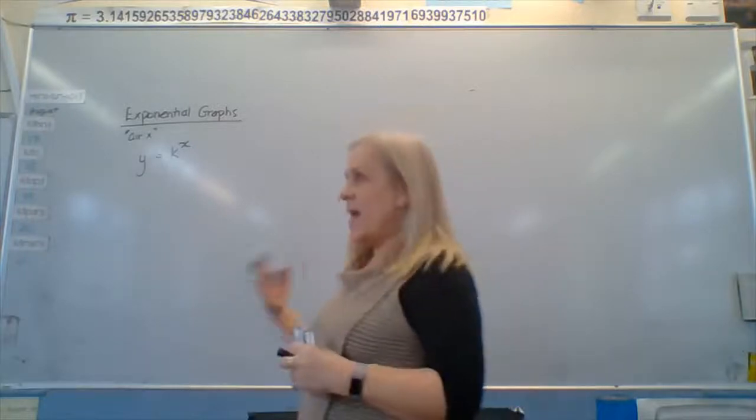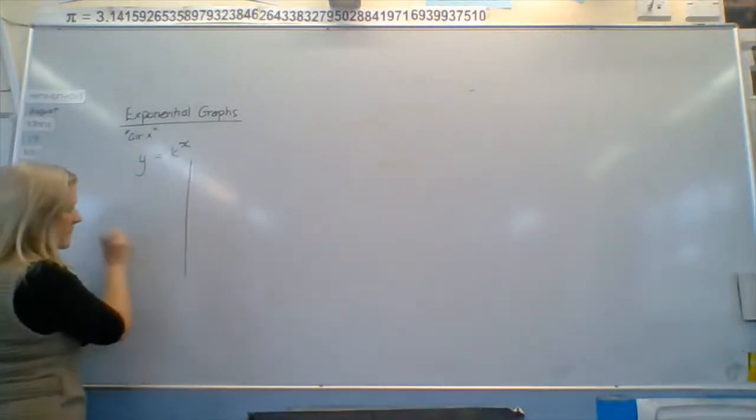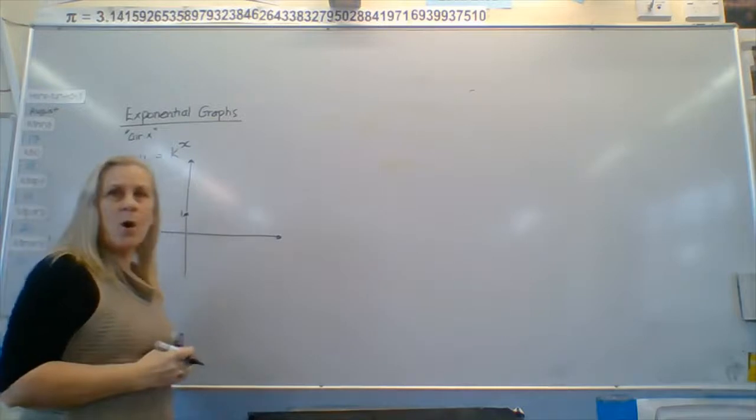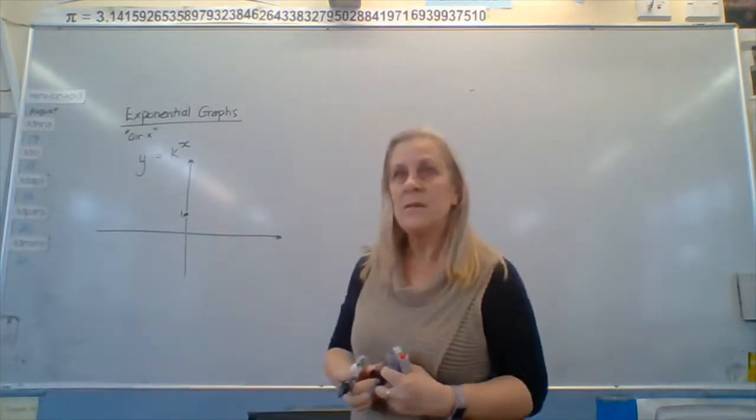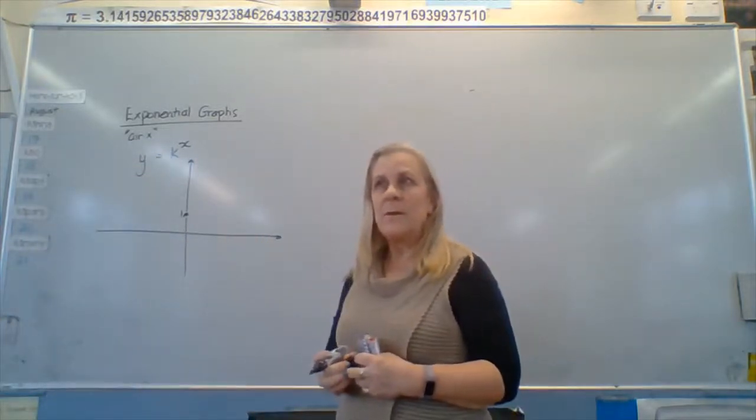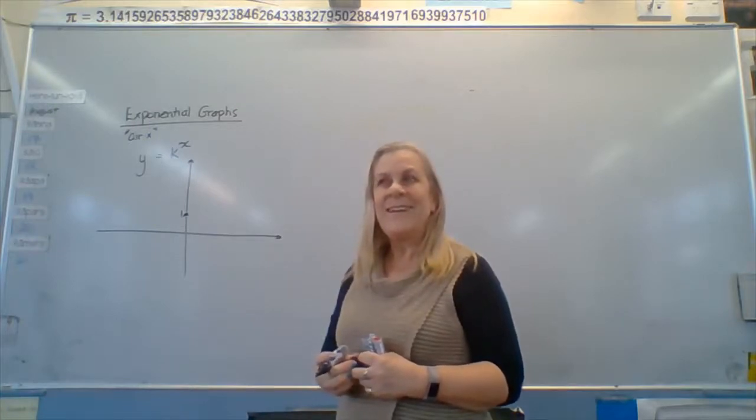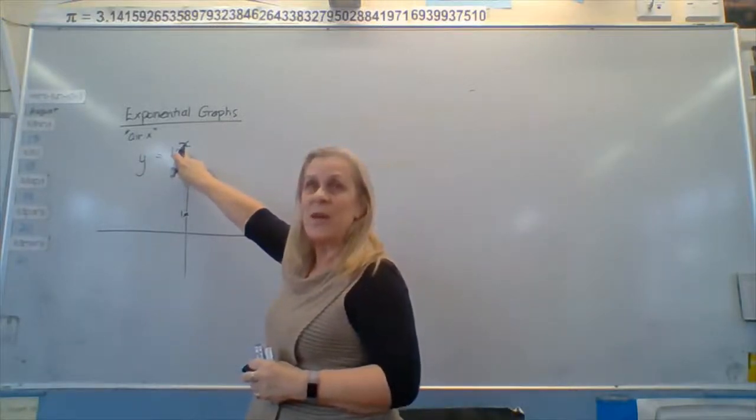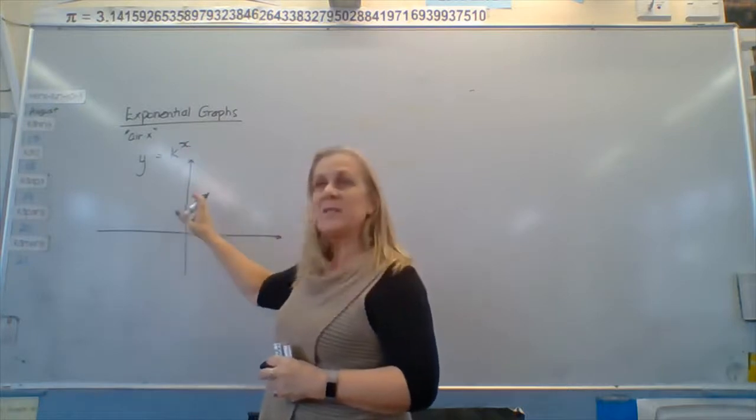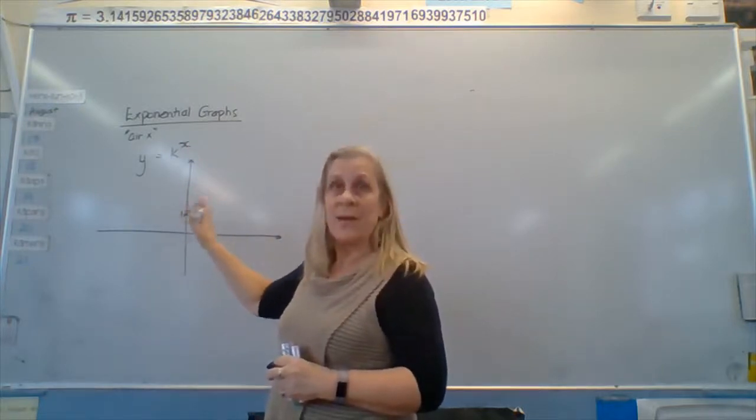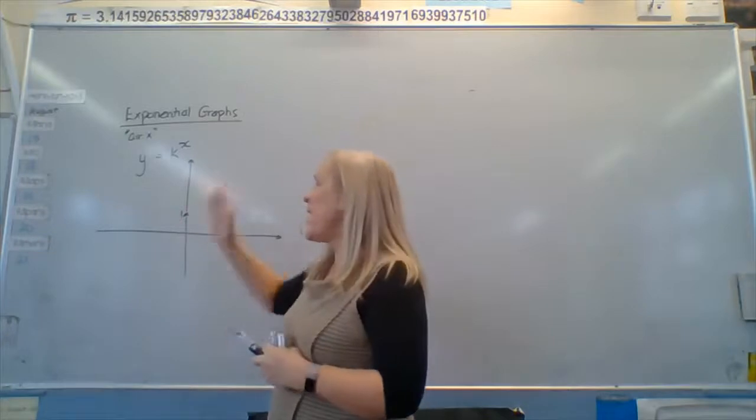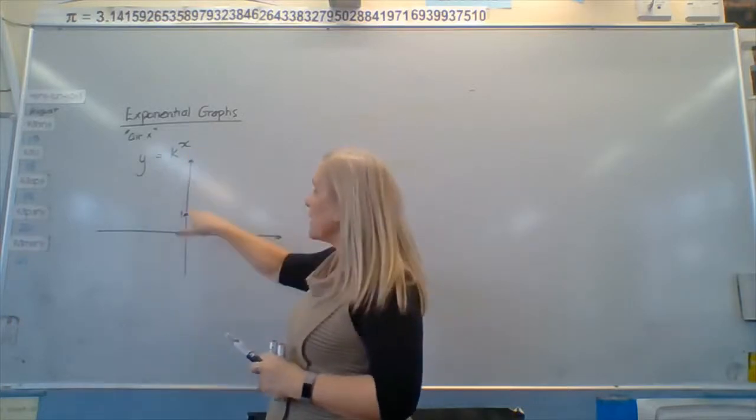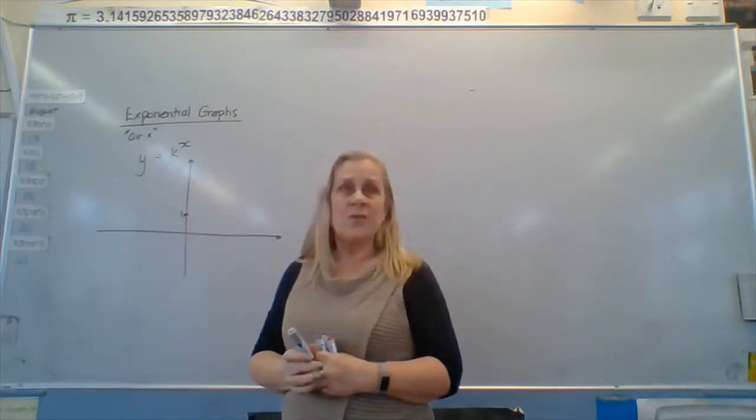It has a pattern, and the pattern is that the basic graph always goes through one. Can anybody tell me why that always goes through one? Good, well done. Anything to the power of zero. So when x is equal to zero, anything has the value of one. So that means this will always go through one. There is a way that could change and that's by having a multiplier, but we're not going to deal with a multiplier this year.